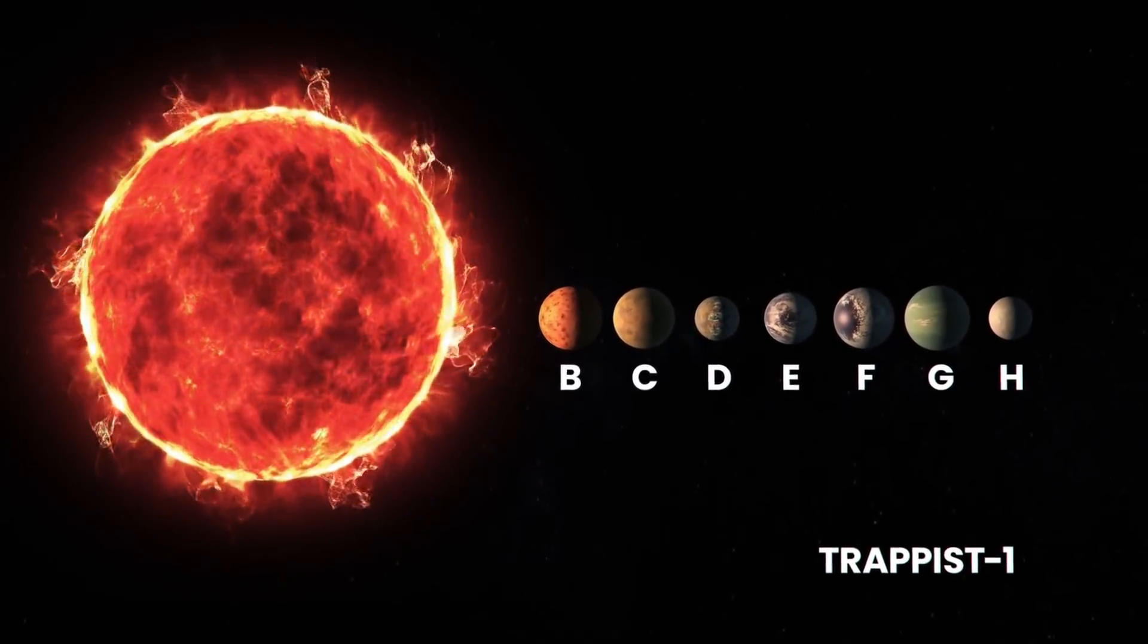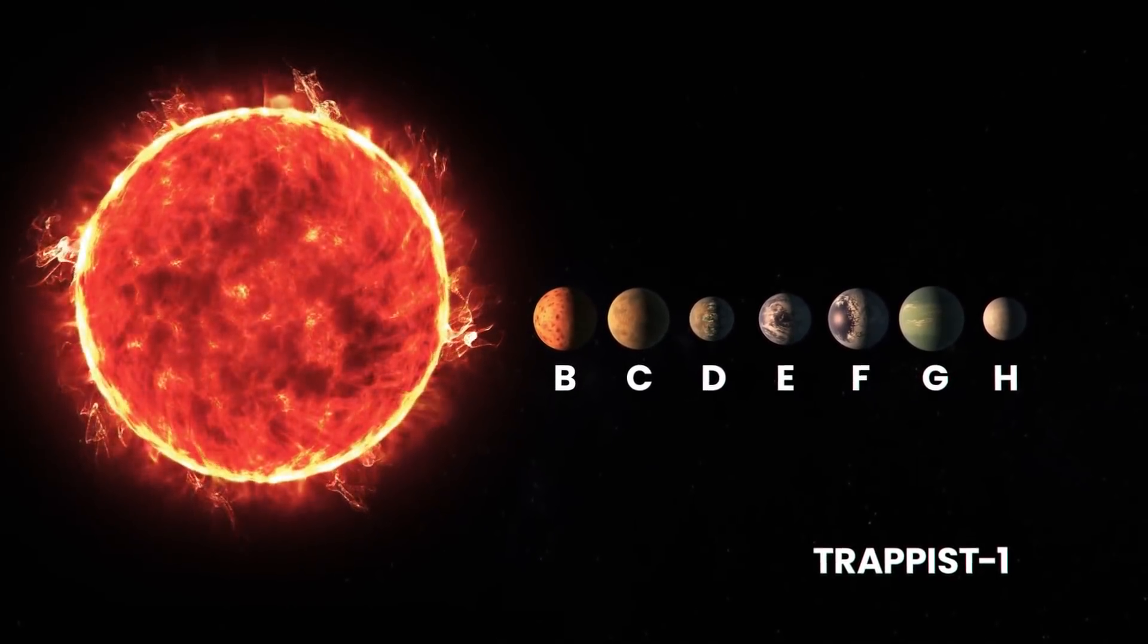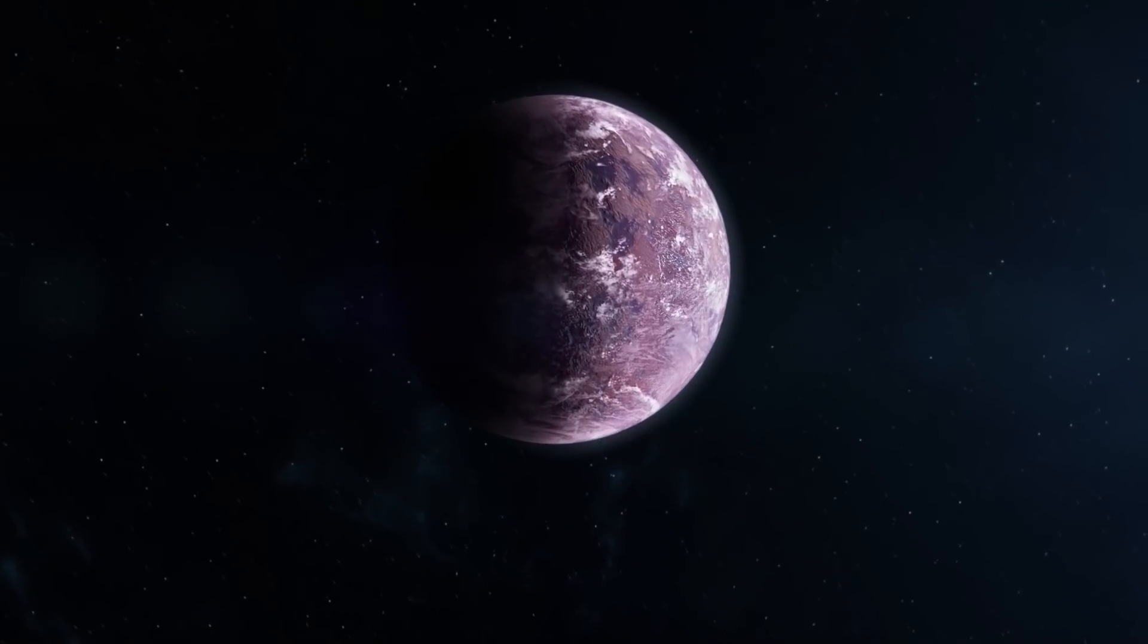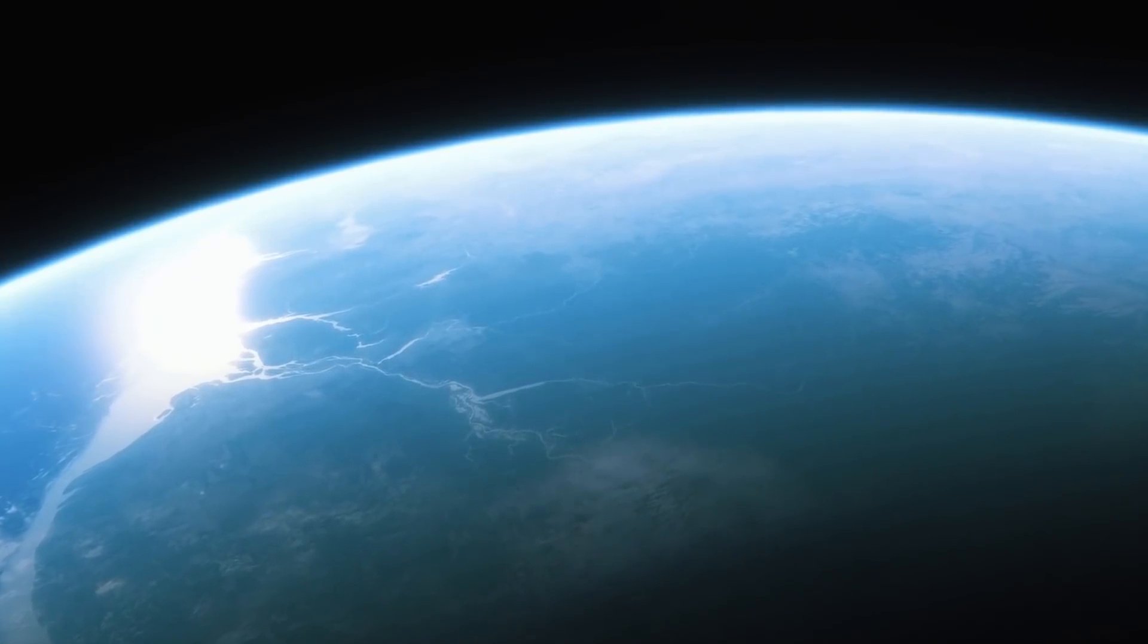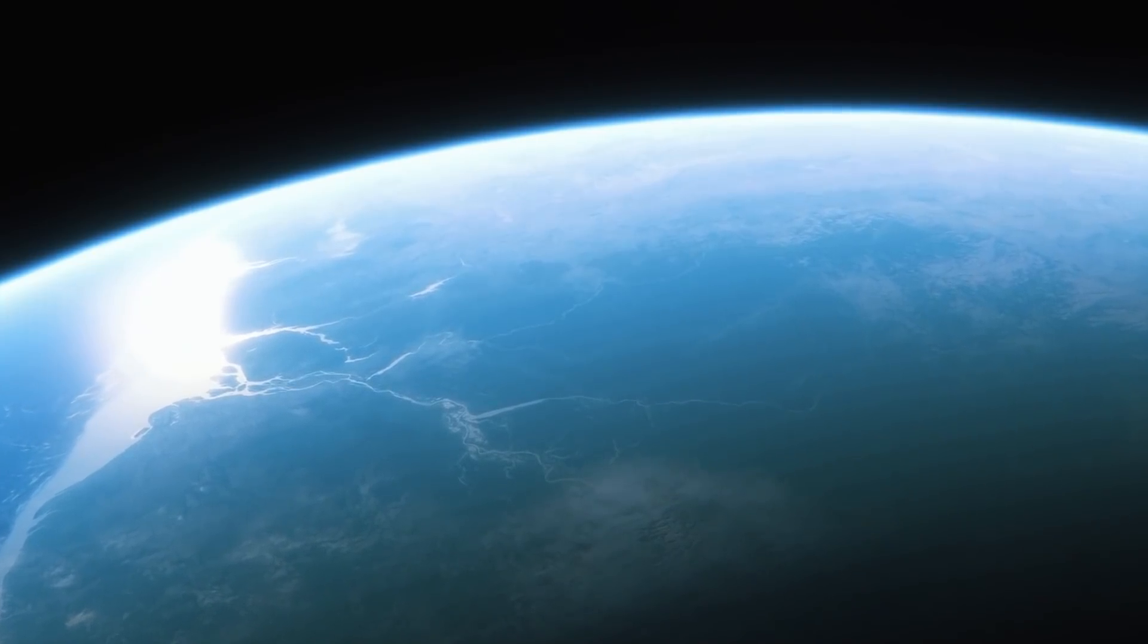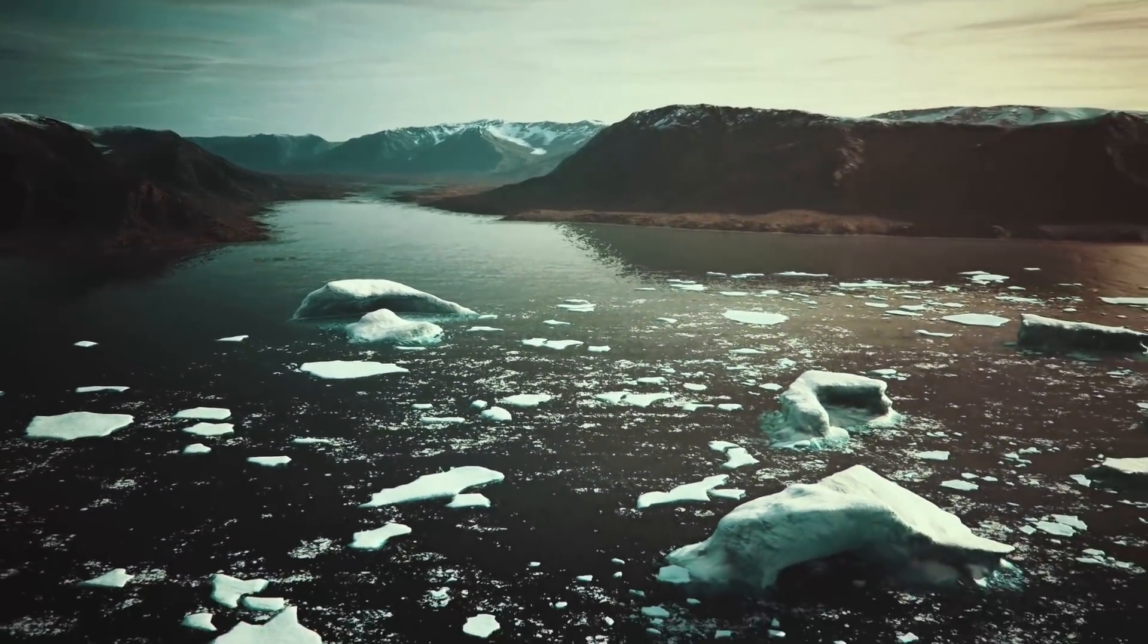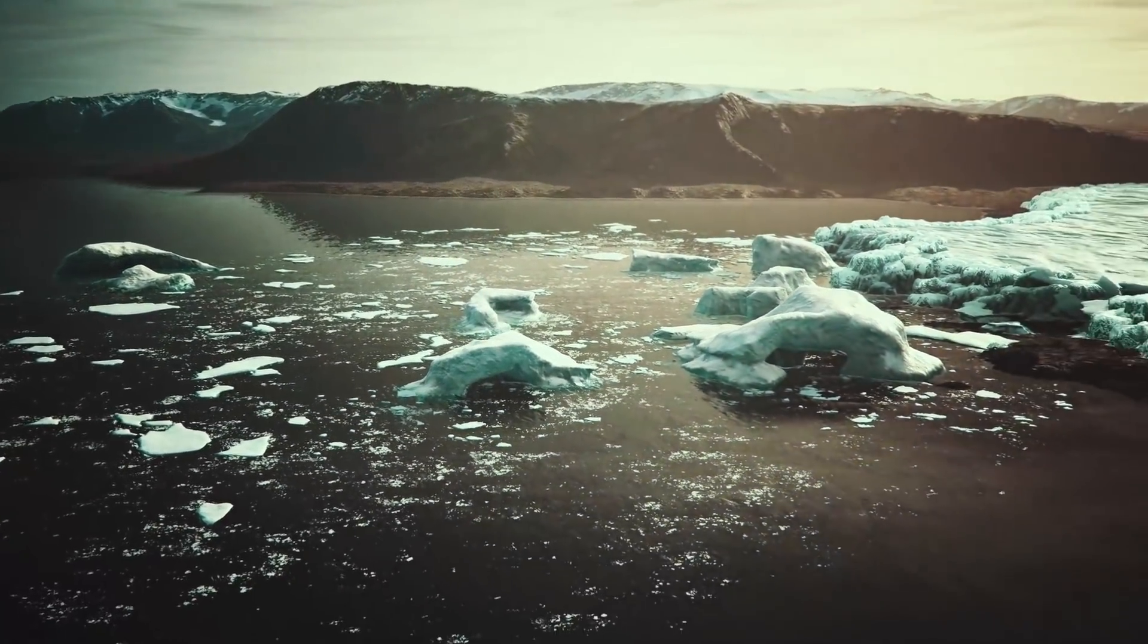Every one of these planets have the potential for having water on the surface. Just a year later, in February 2018, a closer study found that these seven planets could have more water than the oceans of Earth, and three of these planets are just the right distance from the star to be warm enough for liquid water.